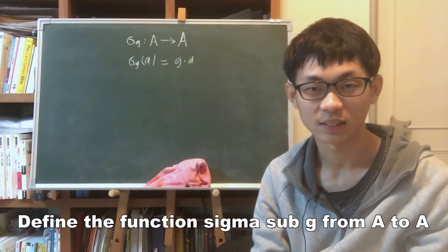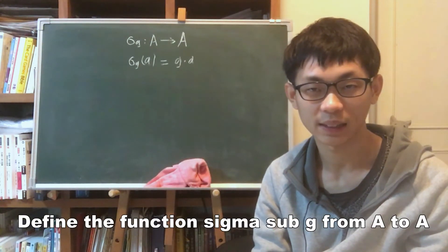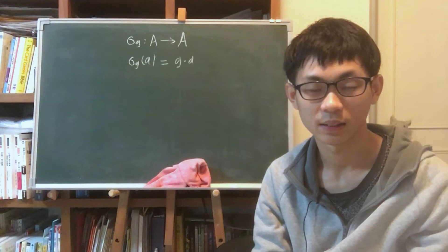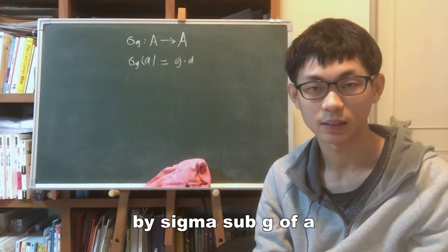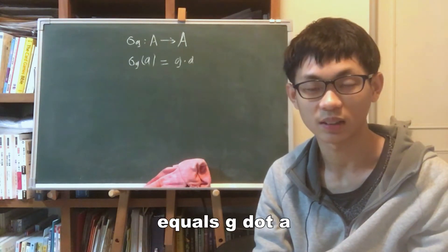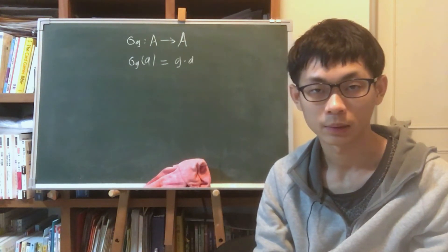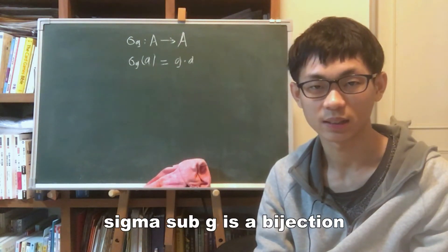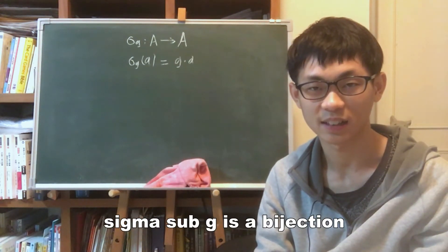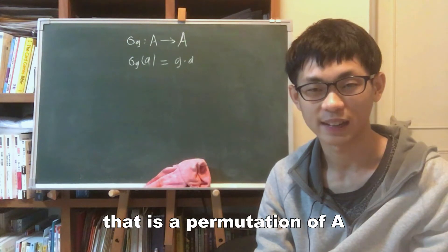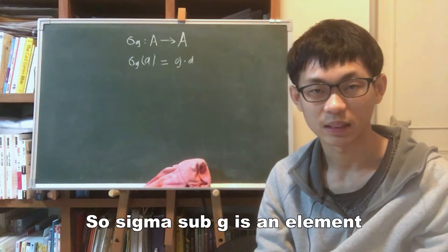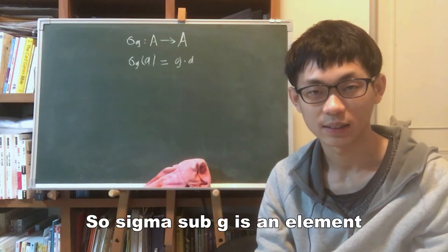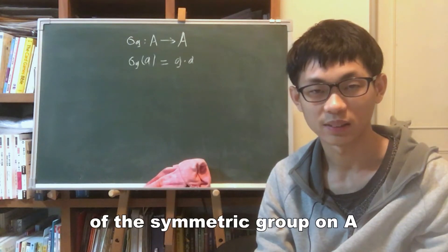Consider a fixed element g in G. Define the function σ_g from A to A by σ_g(a) = g · a. It is easily shown that σ_g is a bijection — that is, a permutation of A. So σ_g is an element of the symmetric group on A.